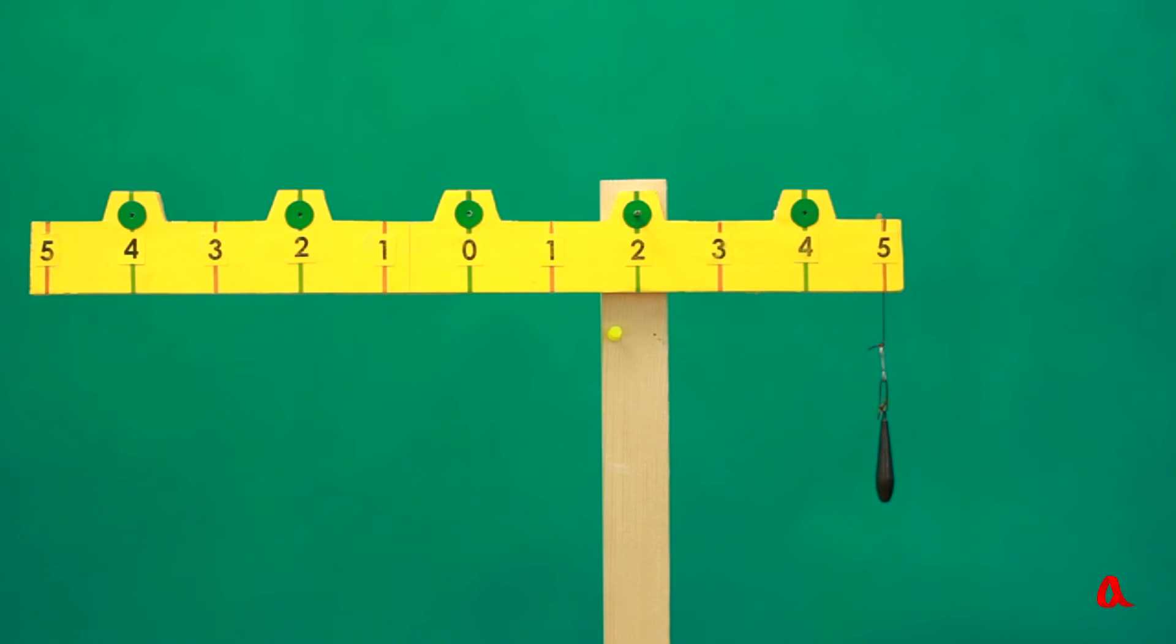This is a lever. There's a load suspended on one side of it and nothing on the other side. Nevertheless, the lever is in equilibrium. How so?